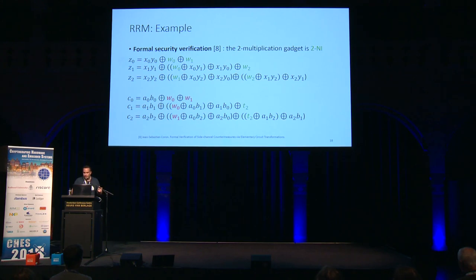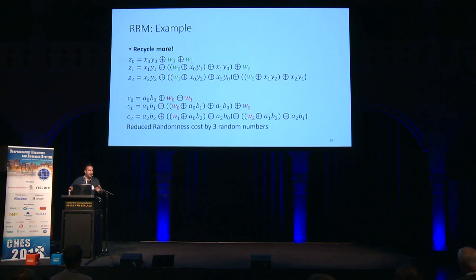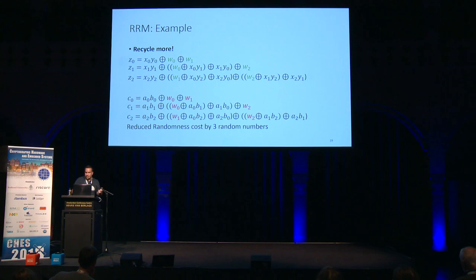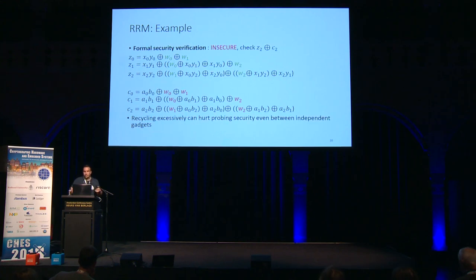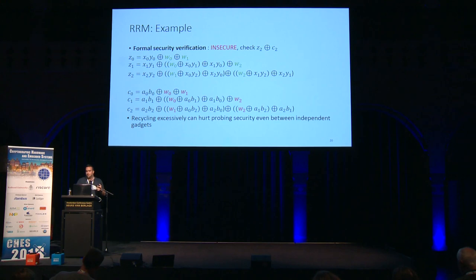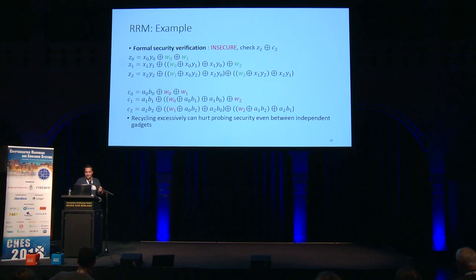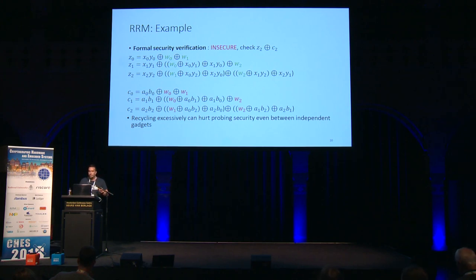The next step is to become a little greedy and try to recycle more — grab all the random numbers from the first multiplication and reuse them in the second. They are independent, so it should be fine, and it reduces randomness cost even more. However, once you throw this into the tool, it will complain — it will tell you this is insecure. For example: check value Z2 XOR C2 — there is a two-probing attack because W1 and W2 cancel out between the two gadgets. We can observe that recycling excessively will hurt probing security, even between independent gadgets.